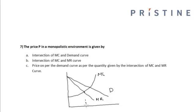...gives me the optimal quantity, or the quantity that is produced under this environment. And the price corresponding to this quantity on the demand curve will give me the price that a monopolist will charge. So the price in a monopolistic environment is given by the price on the demand curve as per the quantity given by the intersection of marginal cost and marginal revenue curve.